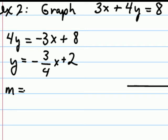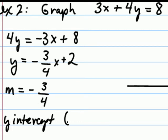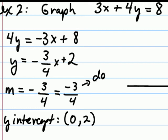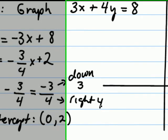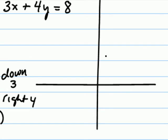Now that it's in slope-intercept form, we can identify the slope as a negative 3/4 and the y-intercept as the ordered pair zero, two. The slope of negative 3/4 would indicate a negative 3 over a positive 4, telling me to move down 3 units and right 4. And again, this is from the y-intercept.